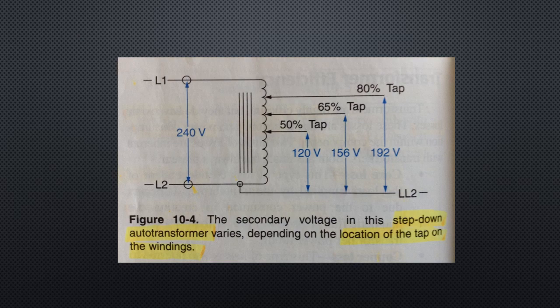Transformers can also be classified by their windings. In an isolation transformer, the primary and secondary windings are physically separate and independent. In an auto transformer, there is only one winding shared by the primary and secondary circuits. See figure 10-4. Auto transformers are used when voltage reduction is needed, such as starting AC motors. Though economical to manufacture and very efficient, auto transformers are limited in application due to their low voltage ratios.